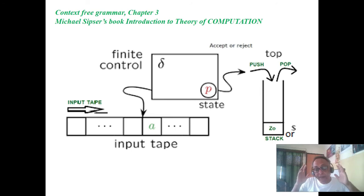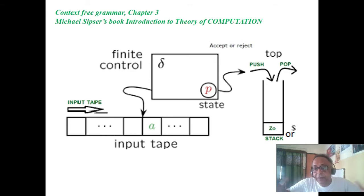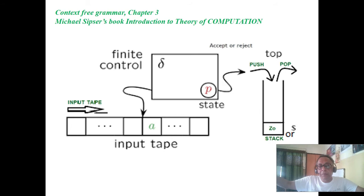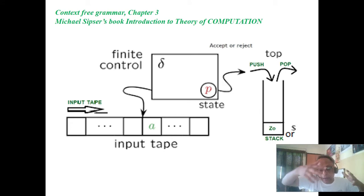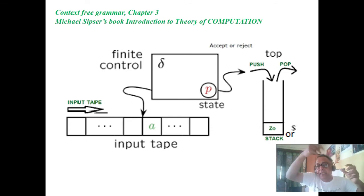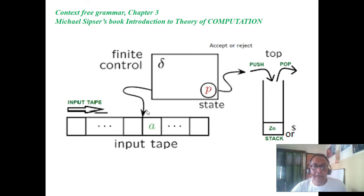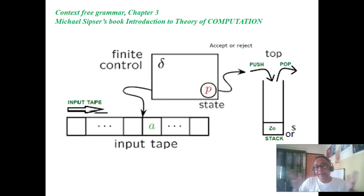Non-deterministic PDA is very difficult to realize in hardware because you have to replicate machines for any possible combination consuming epsilon in input. That means you are consuming nothing in input, putting nothing on the stack, but changing your state. You are not consuming anything, not pushing anything, but you are changing state P to Q. That is not possible in a deterministic push-down automaton.